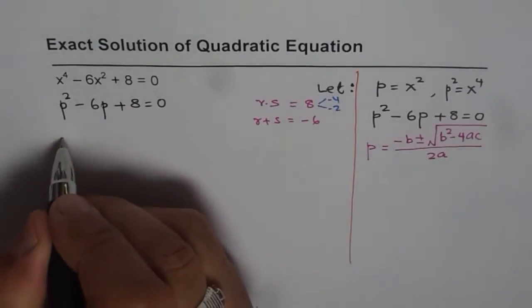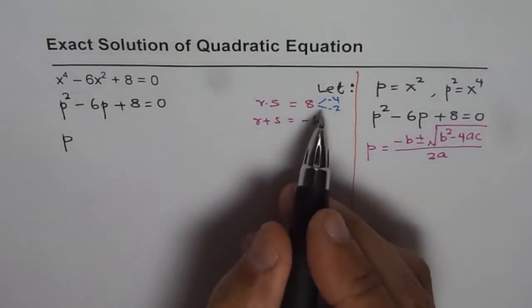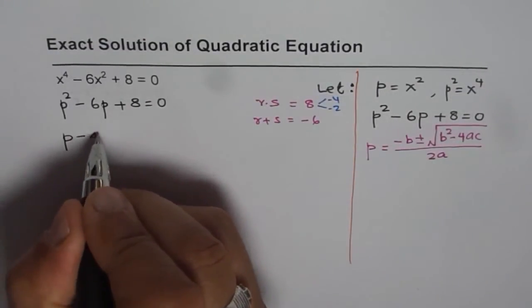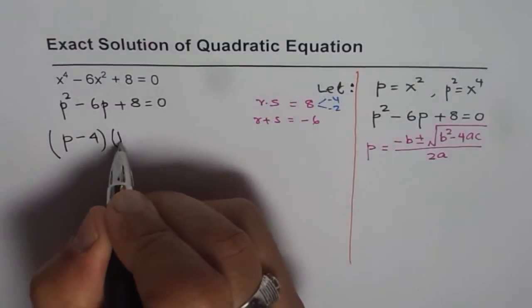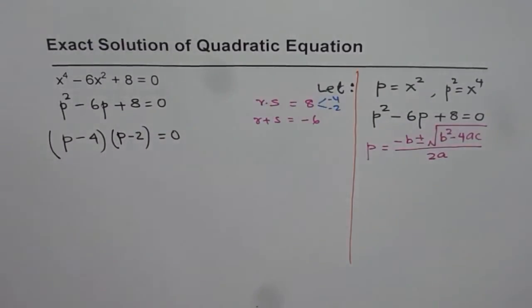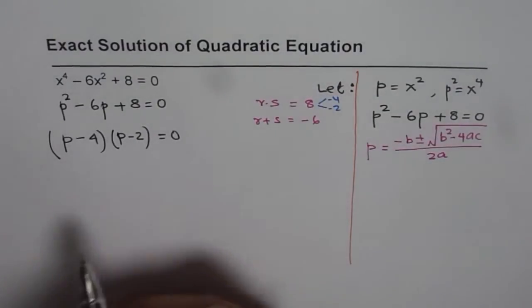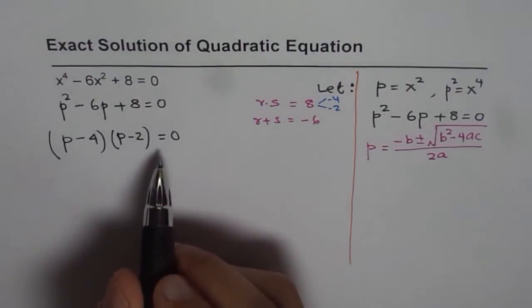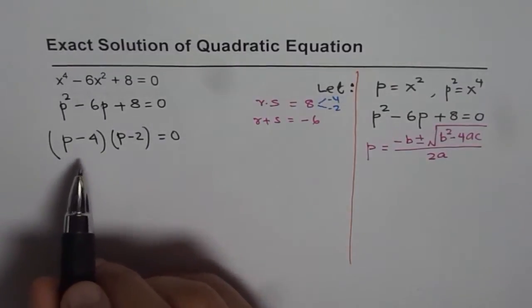We can factor this and write it as (p minus 4) times (p minus 2) equals 0. We have factored and got the factored form of this equation in p.